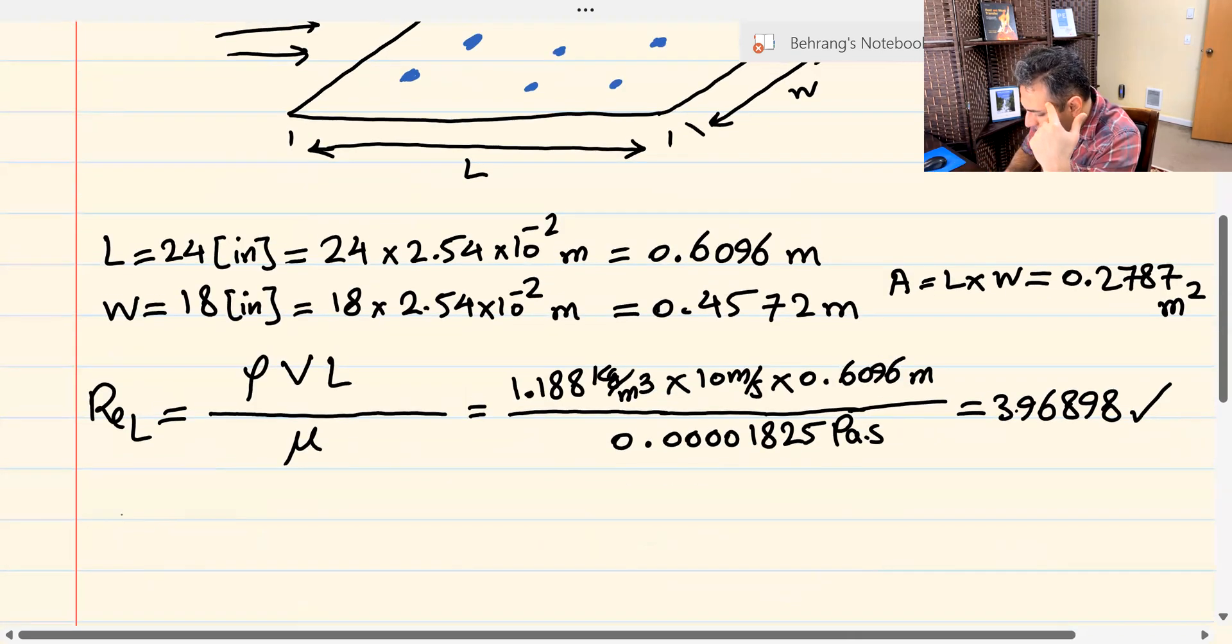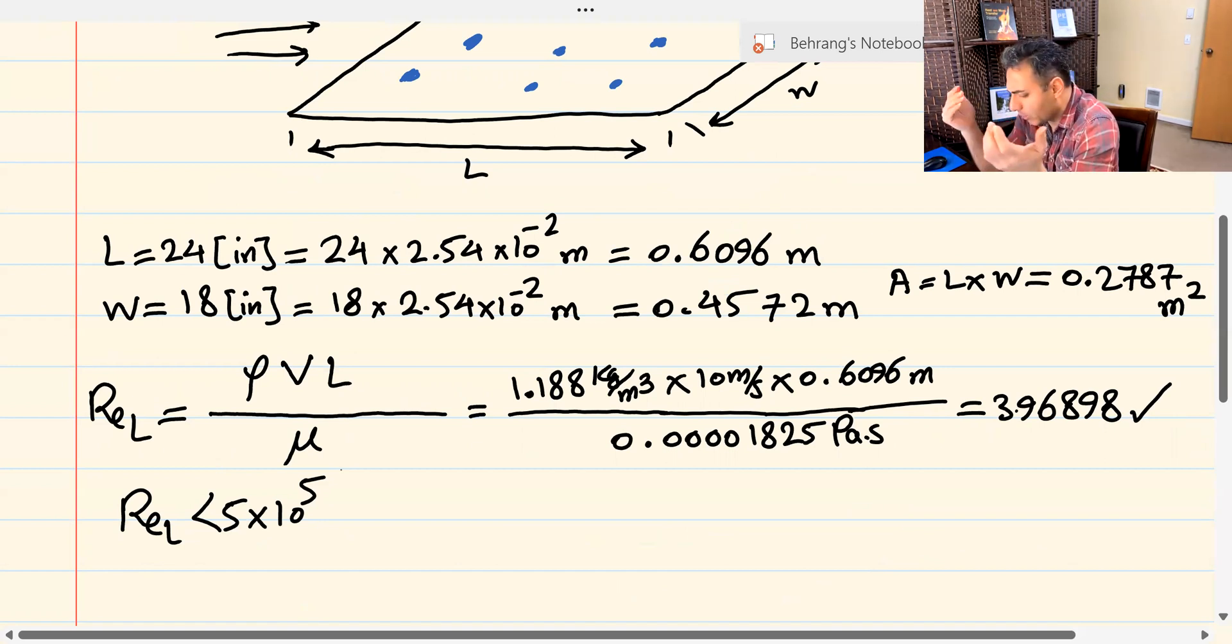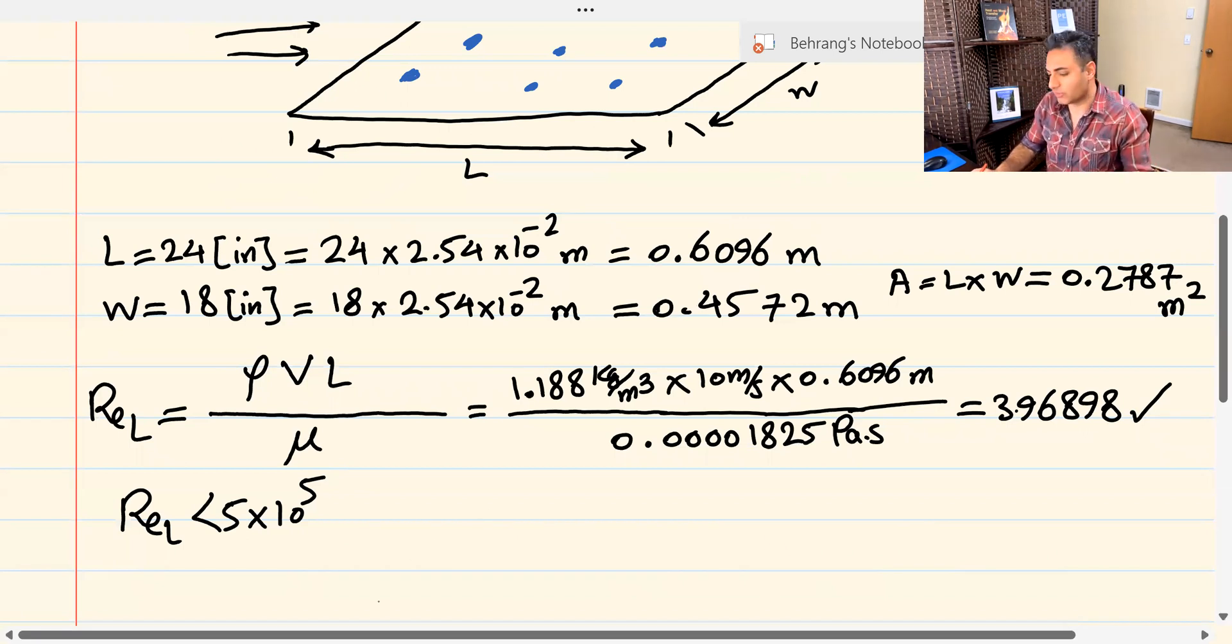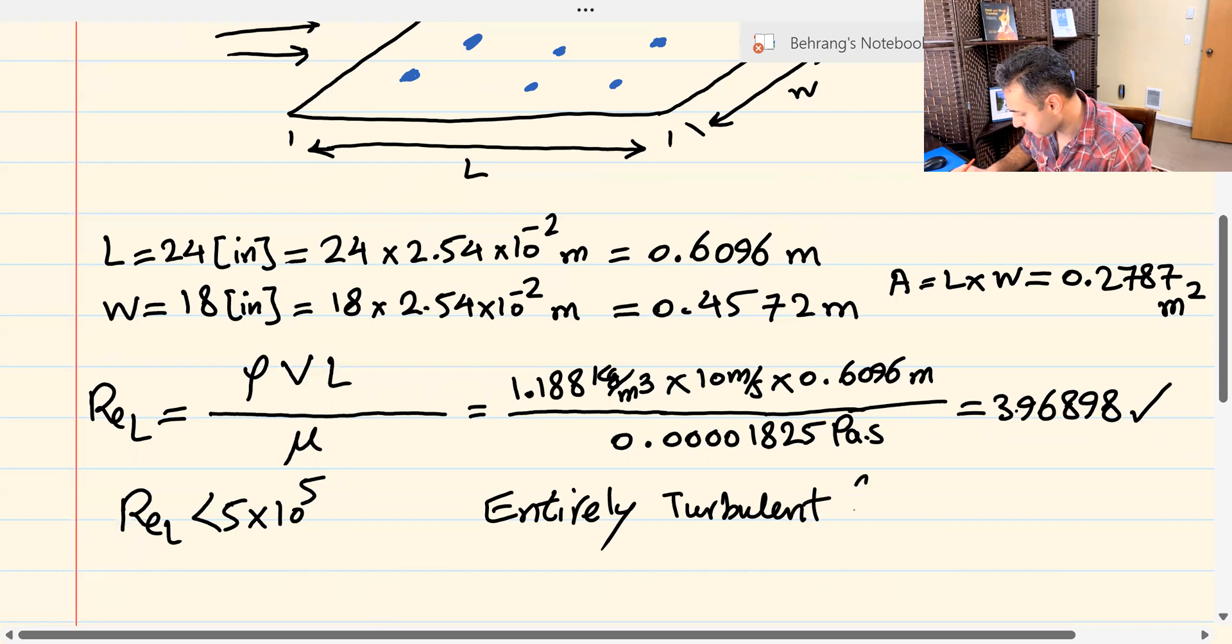This value turns out to be less than 5 times 10 to the fifth. And this is the confusing, and that's the trick part of this question. Because you might be like, well, this Reynolds number is less than 5 times 10 to the fifth, so this is laminar flow. No, it's not. You have turbulators. You have the capacitors and resistors. They're going to trip the boundary layer. And no matter what, it doesn't matter that Reynolds number is less than 5 times to the fifth.